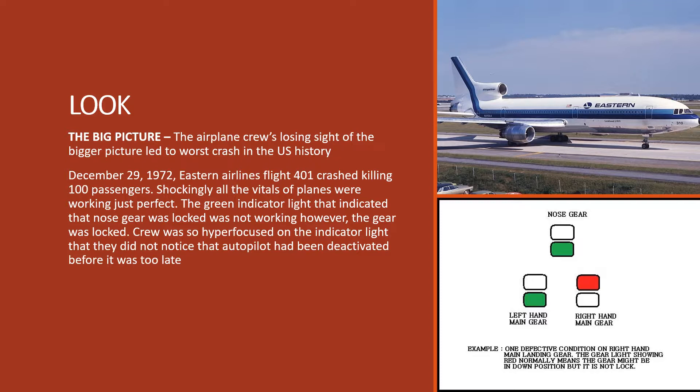An example of looking at the bigger picture: airplane crews losing sight of the bigger picture led to one of the worst crashes in US history. On December 29, 1972, Eastern Airlines Flight 401 crashed, killing 100 passengers. Shockingly, all the vitals of the plane were perfectly fine. The green indicator light showing that the nose gear was locked was not working — however, the gear was locked. The crew was so hyper-focused on the indicator light that they did not notice that autopilot had been deactivated before it was too late.